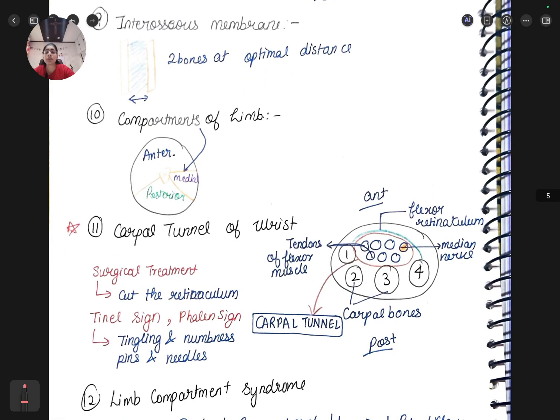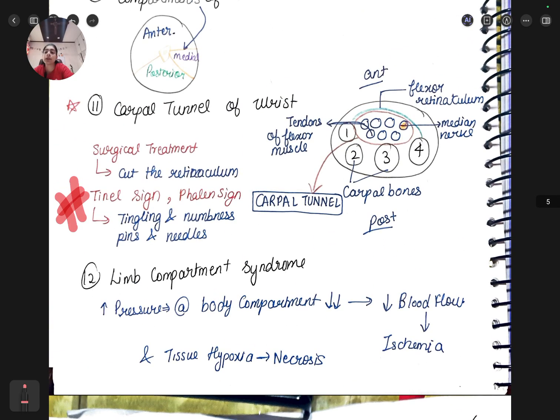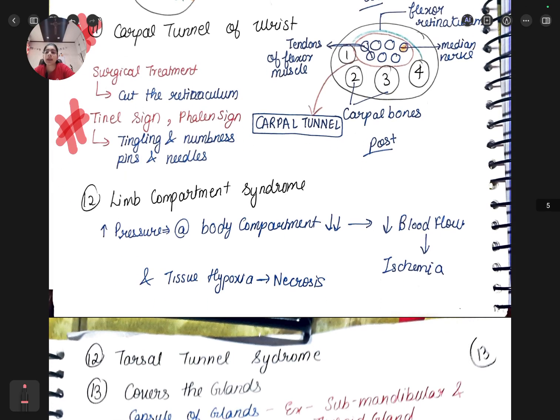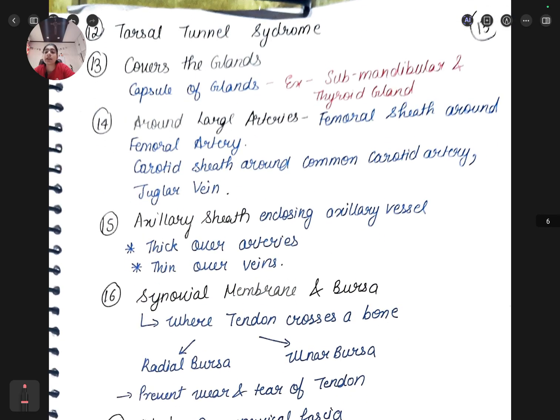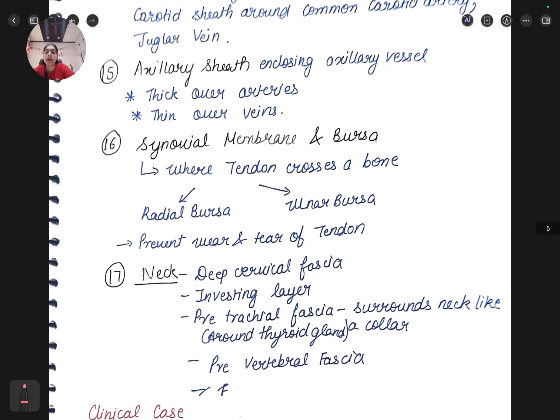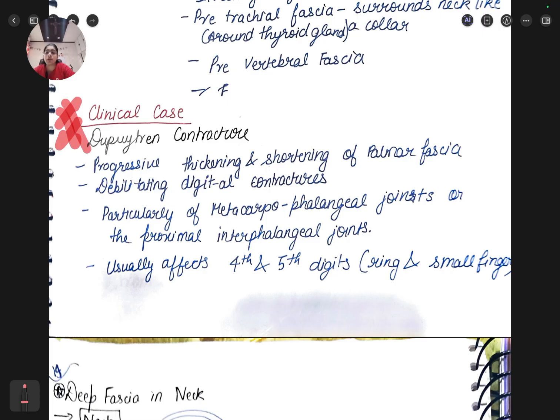Compartments of limb - carpal tunnel of wrist. Tinel sign, Phalen sign - whenever a clinical concept comes you need to be over alert because that can come as a separate two marker question. Tingling and numbness, pins and needles. Carpal tunnel is a very important question that will come as a short note in upper limb. Limb compartment syndrome - ischemia can occur here. Tarsal tunnel syndrome, covers the glands, capsule of the glands, around large arteries, axillary sheath, synovial membrane and bursa, deep cervical fascia.